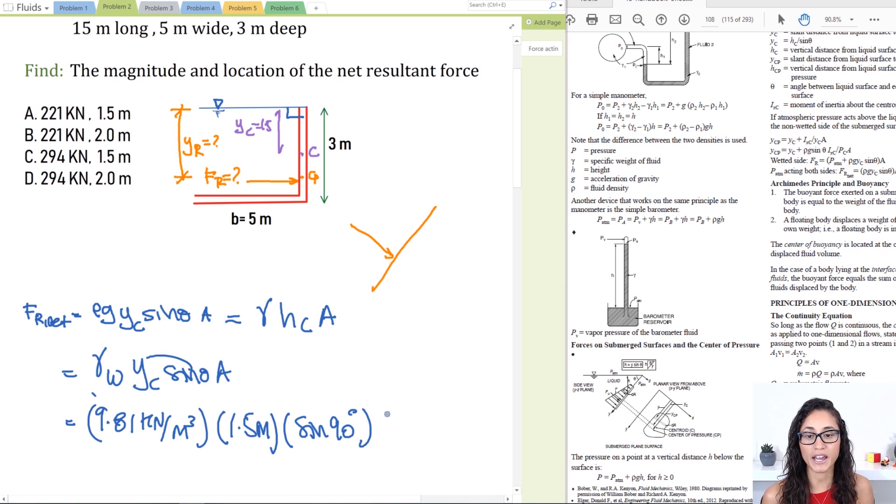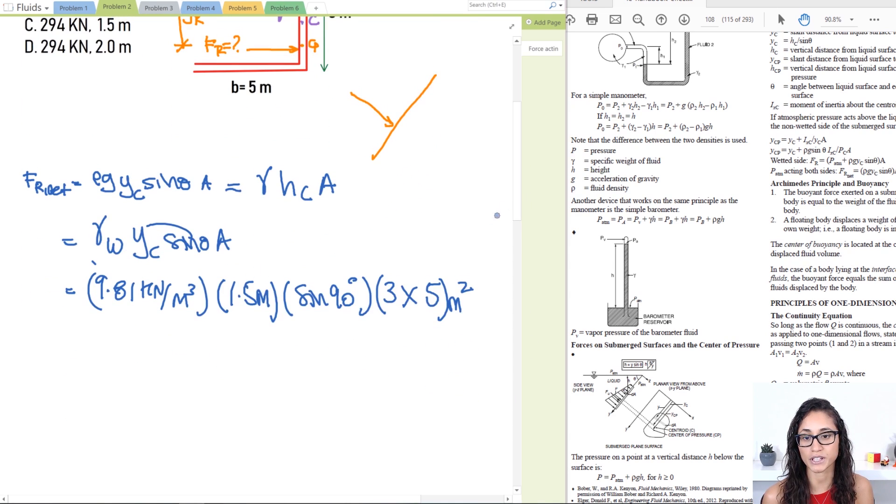Times the area, which is the depth times your width, which is five, and this is meters squared because it's the units for the area.